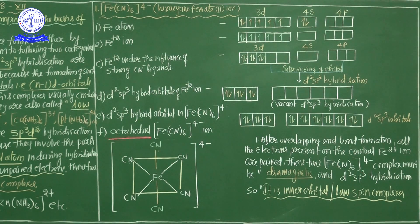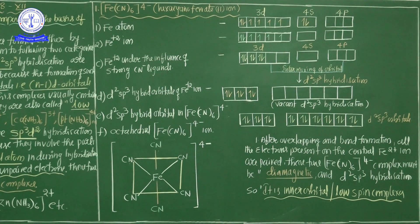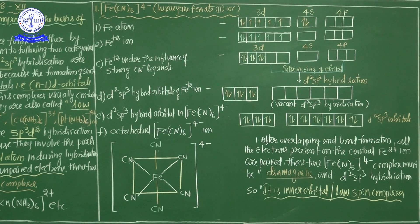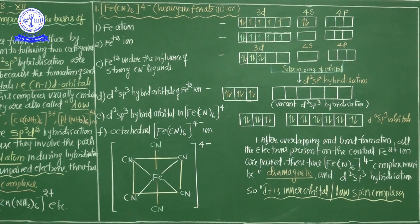I have successfully completed the formation of the first complex. Four more examples remain for the next class. Remember: octahedral complexes show two hybridizations — d²sp³ (inner orbital complexes) and sp³d² (outer orbital complexes).